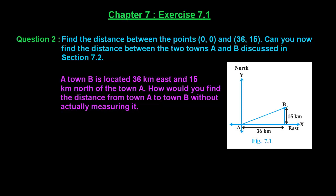Welcome friends. Here is the second question of Exercise 7.1 of Chapter 7. The question says: Find the distance between the points (0, 0) and (36, 15). Can you now find the distance between the two towns A and B discussed in Section 7.2?